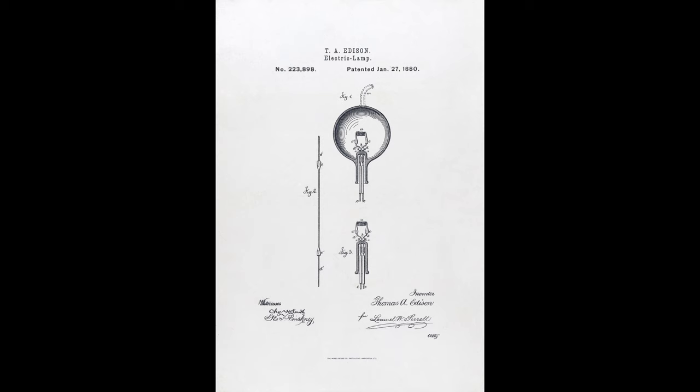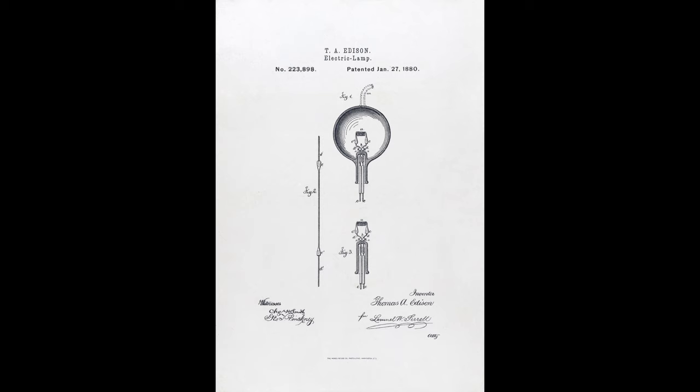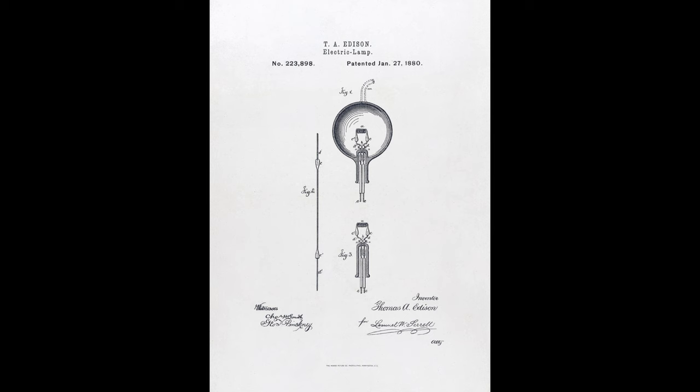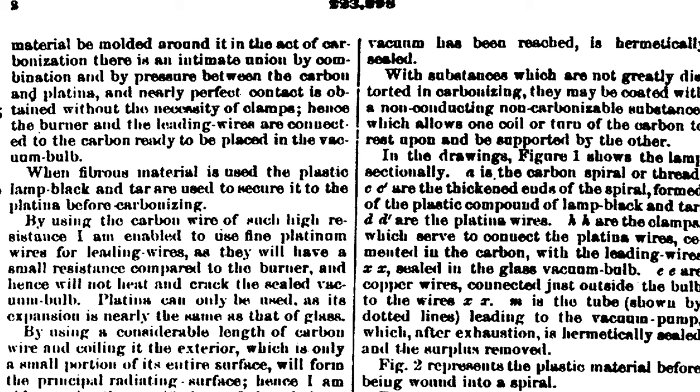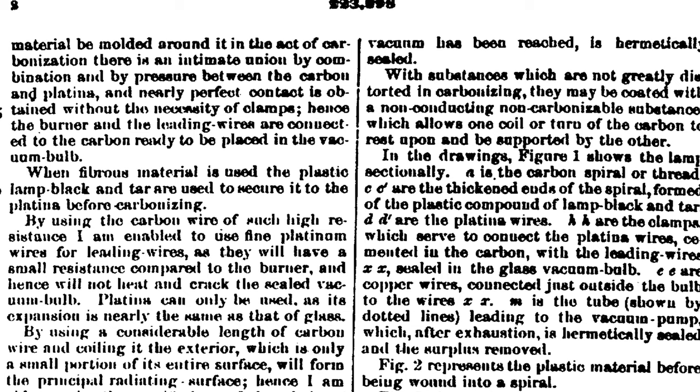In 1883, the United States Patent Office argued that Edison's patent was invalid because it was based on the work of William E. Sawyer. However, six years later, a judge ruled that Edison's claim for a filament of carbon of high resistance was valid.